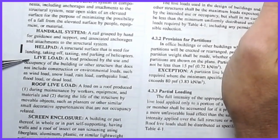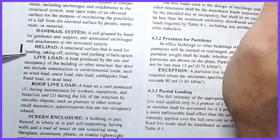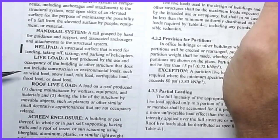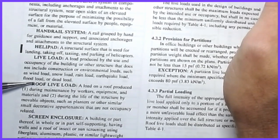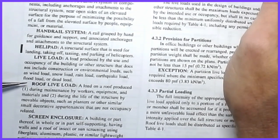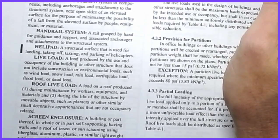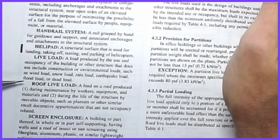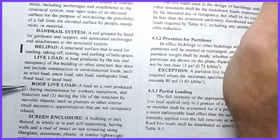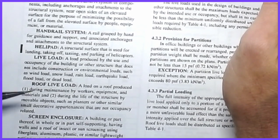Live loads are broken into two categories. The first is the basic live load, which does not include environmental loads such as wind, snow, rain, earthquake, flood, or dead loads. The second category is the roof live load, which is treated a bit differently. In most structures, the average user doesn't have access to the roof — it's generally behind a locked door, with exceptions like rooftop dining.